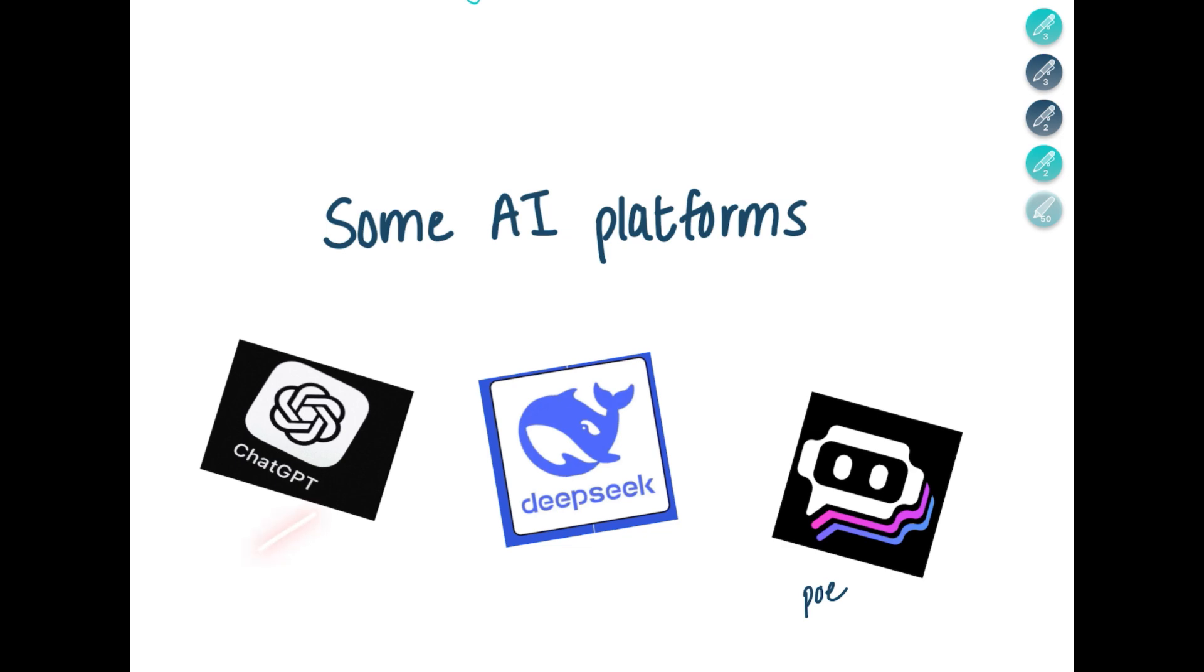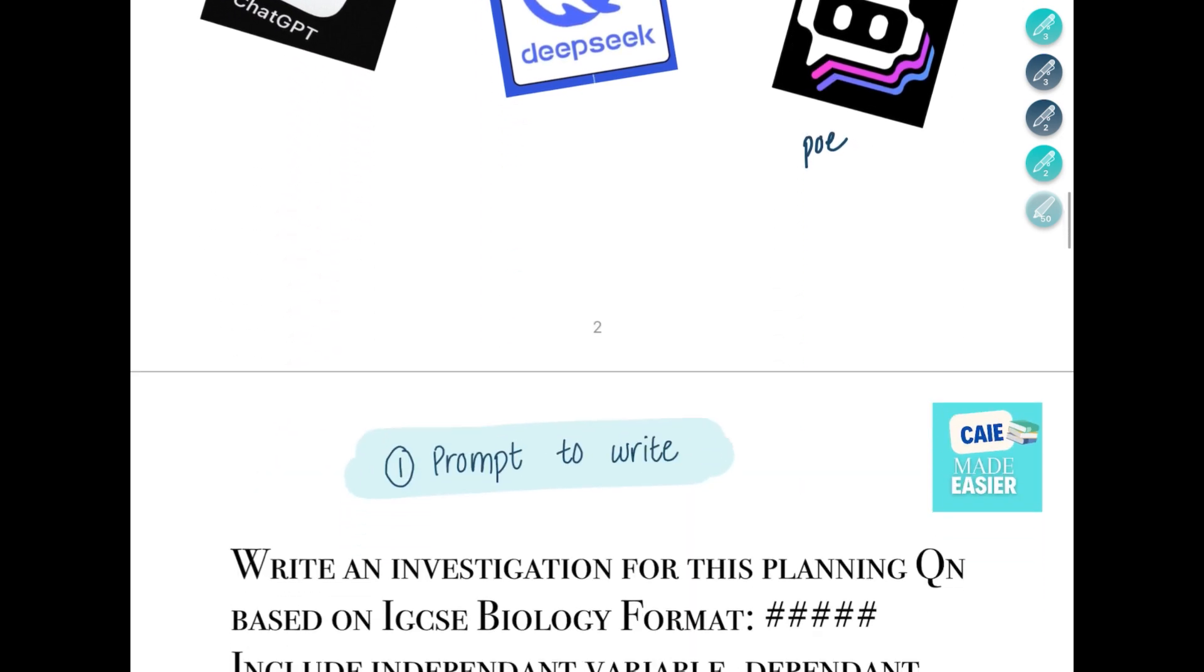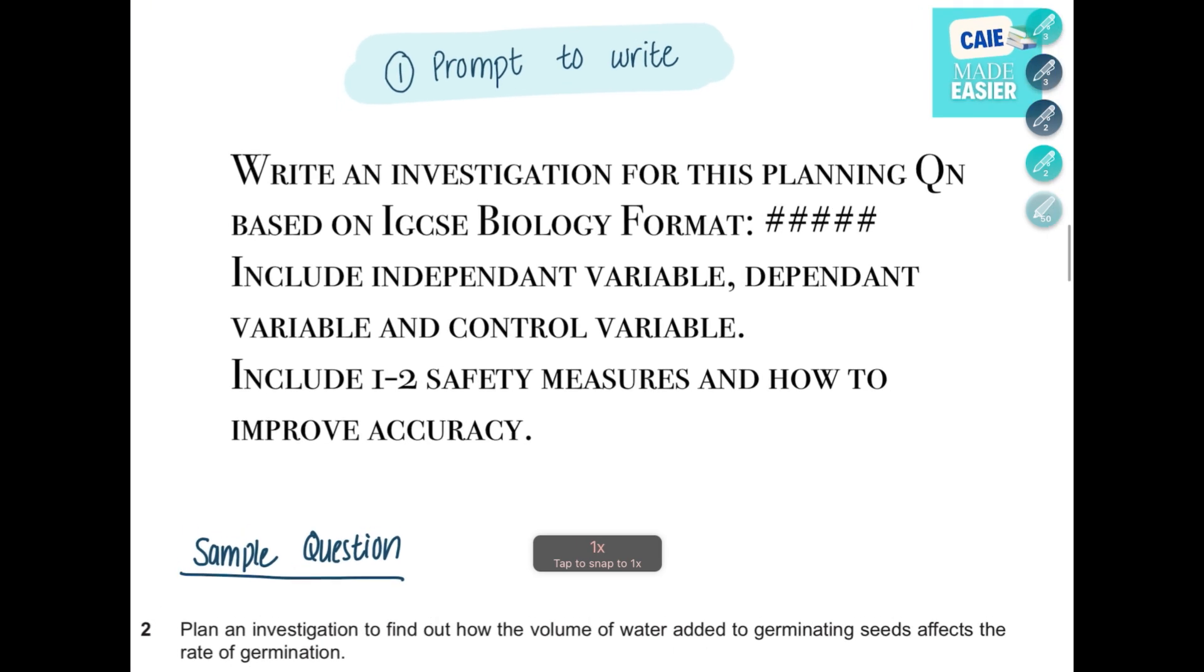First of all, I'll share—this is a prompt to write for an investigation question. You can write this prompt on your ChatGPT and it will help you generate an answer. So write: 'Write an investigation for this planning question based on IGCSE biology format.' I did this for a biology question and it helped me.